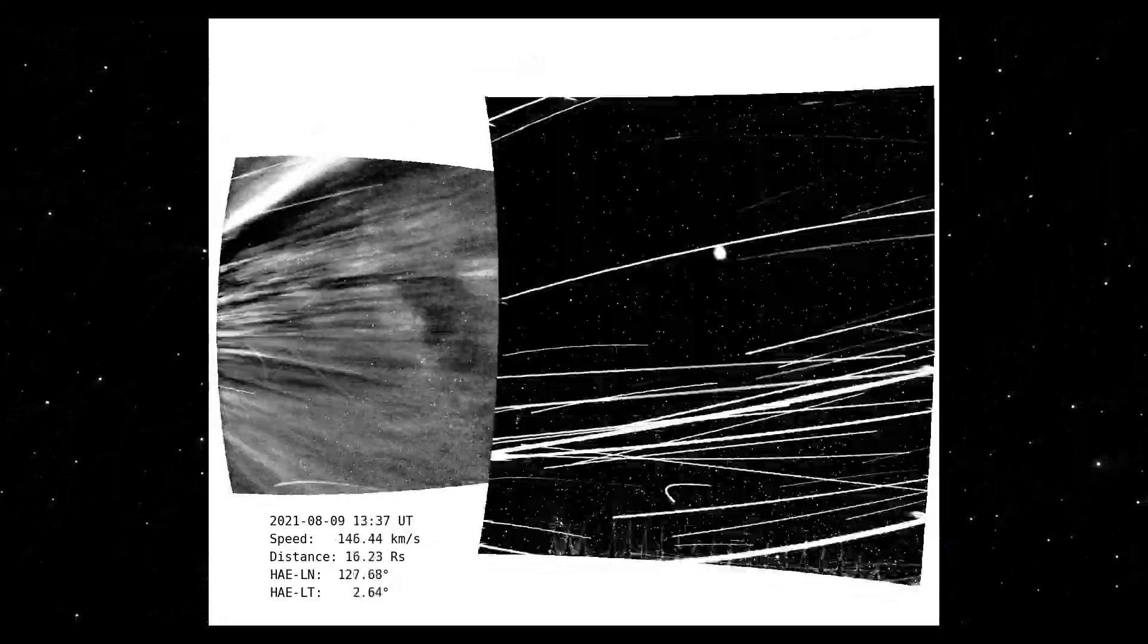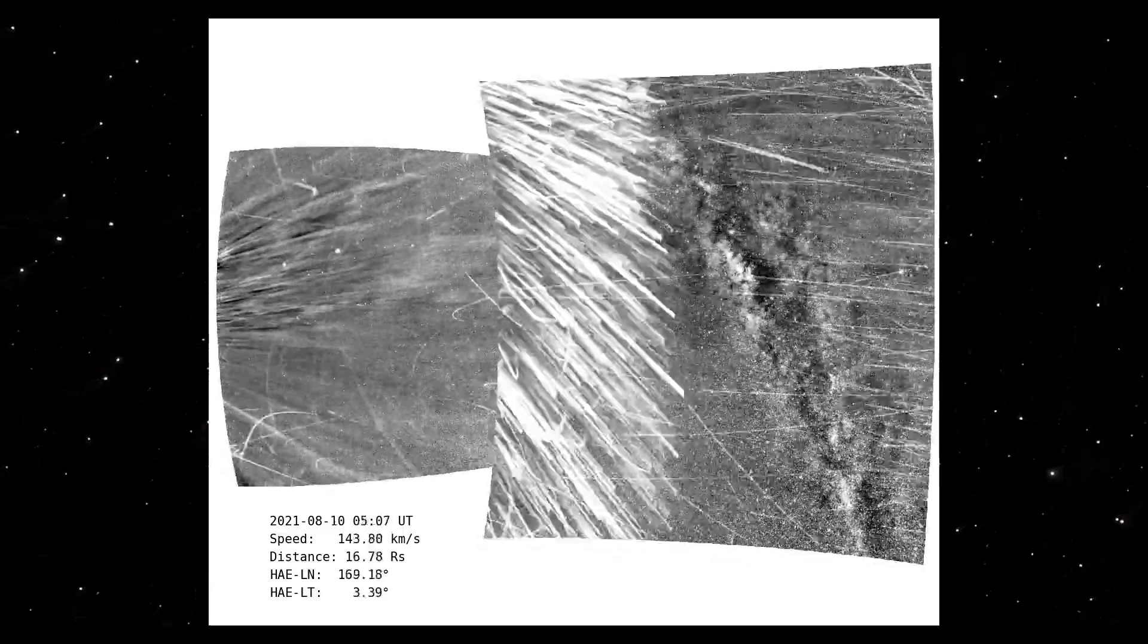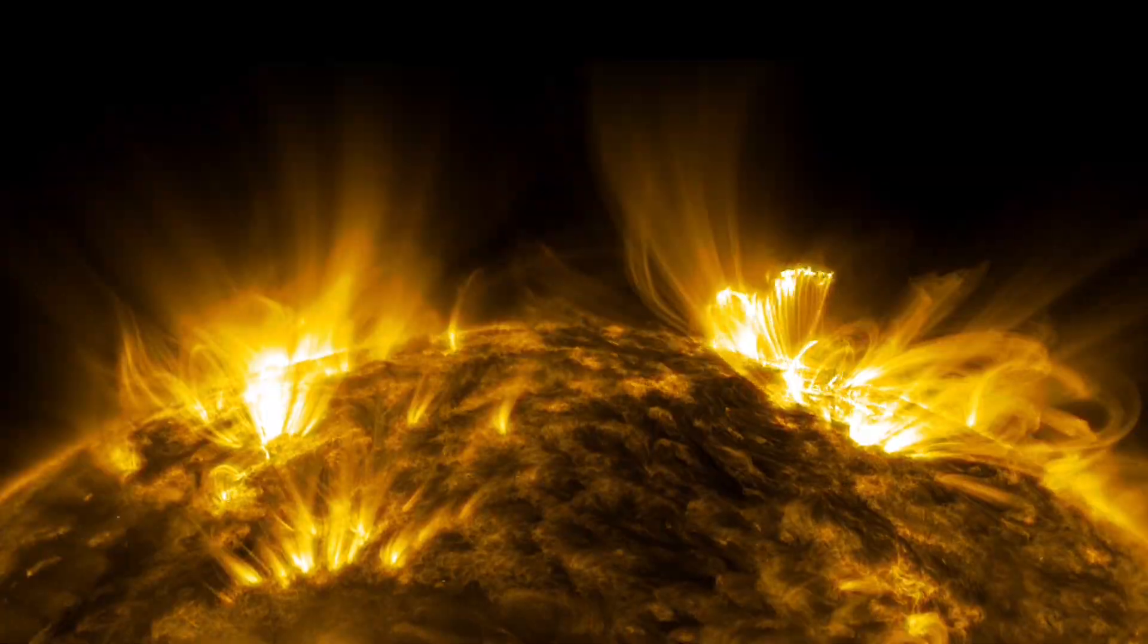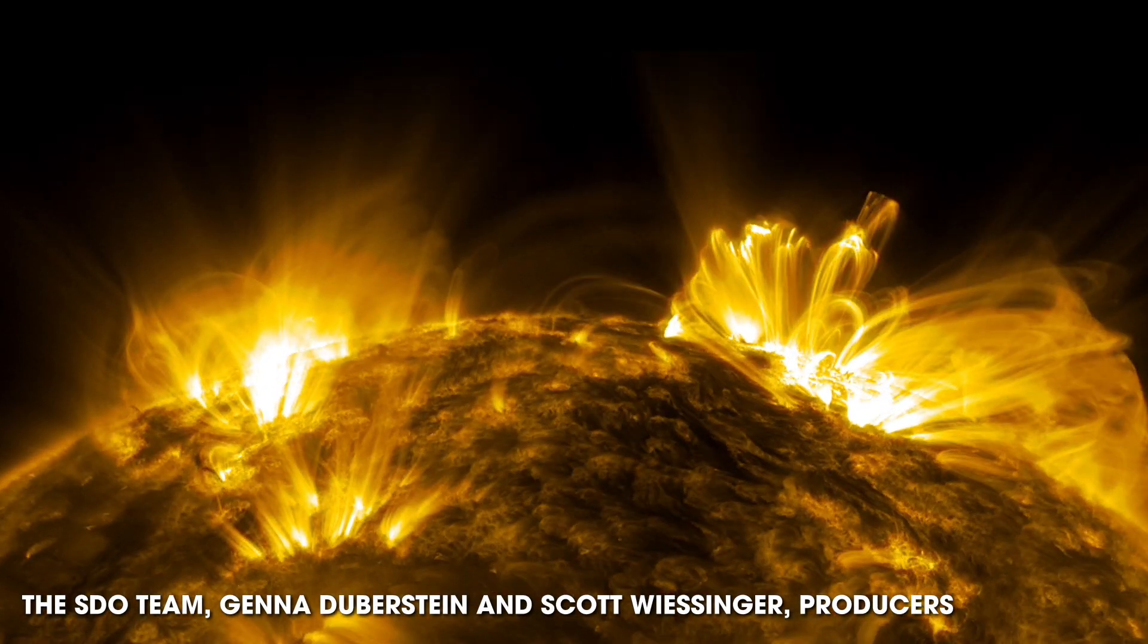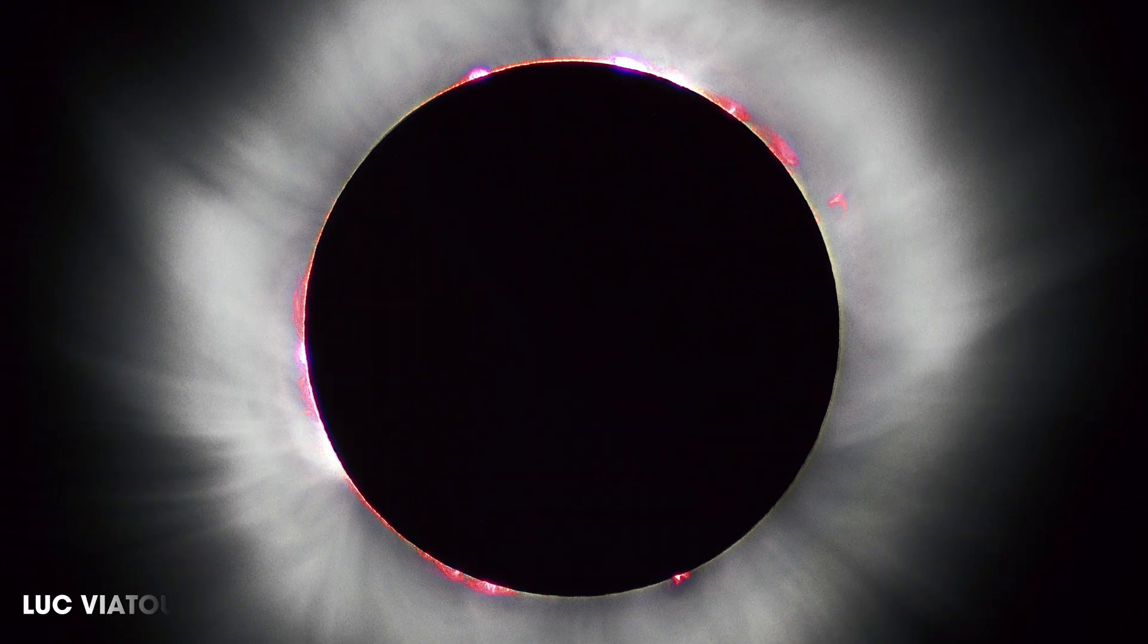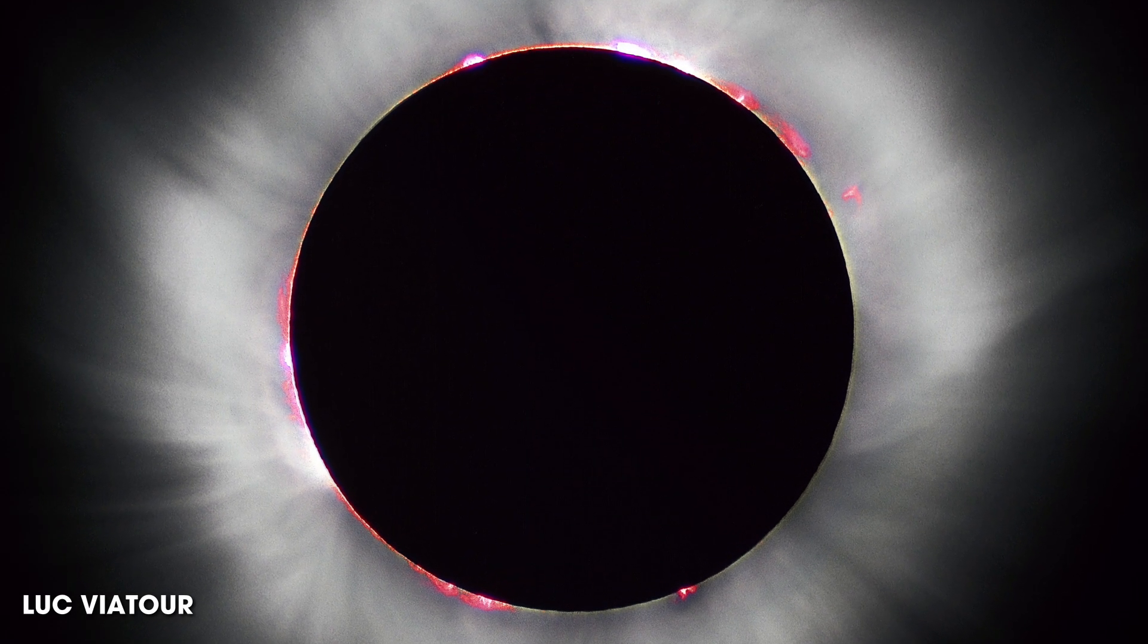What we see in this video is Parker spacecraft's view as it passes into the sun's upper atmosphere, the corona. The sun's corona is the outermost part of its atmosphere, usually hidden by the bright light of its surface, but can be seen during a total solar eclipse.